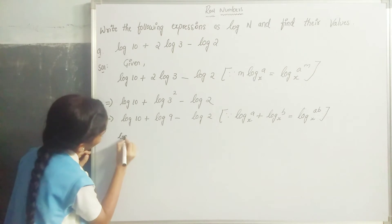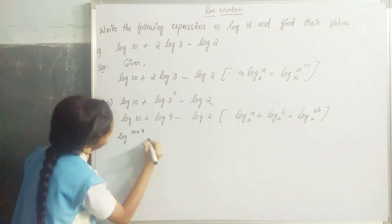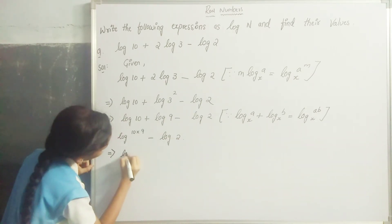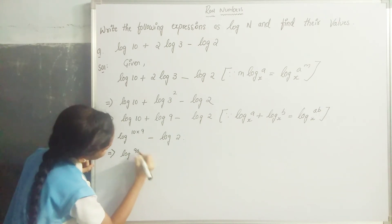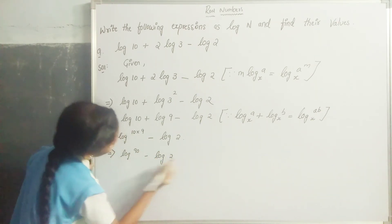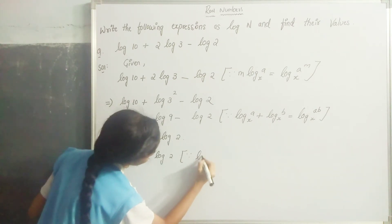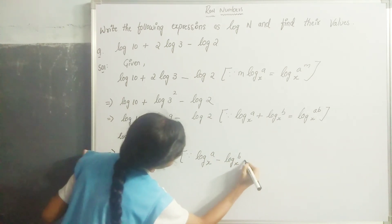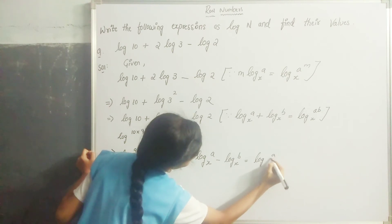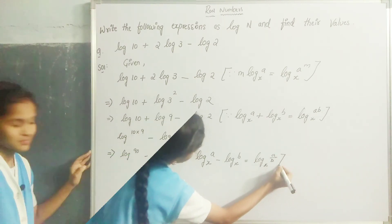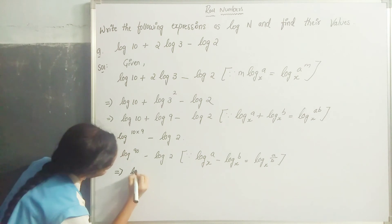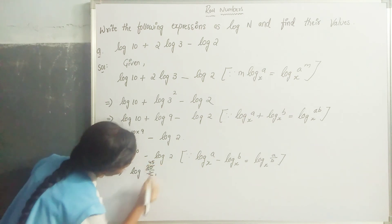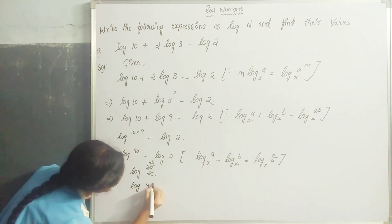Log 10 plus log 9 gives log 10 into 9, which is log 90. Then log 90 minus log 2, since log a to the base x minus log b to the base x equals log a by b, that implies log 90 by 2, which simplifies to log 45.